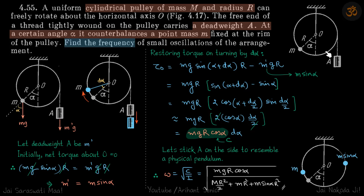We have this cylindrical pulley of mass m and radius r. There is a small mass here and another particle a which is here. It's given that when this mass makes an angle alpha with the vertical, the system is in equilibrium.